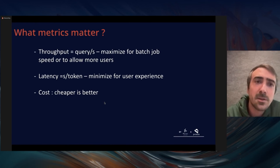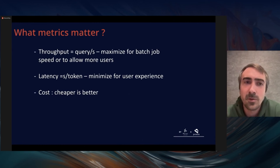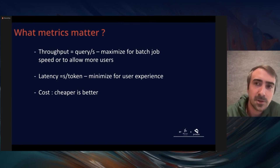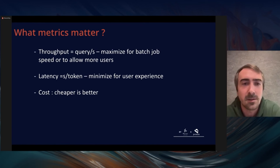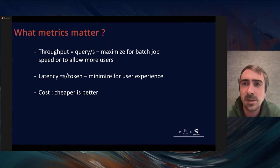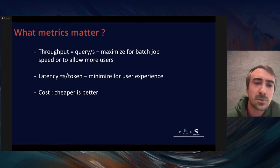The first metric is throughput, expressed in queries per second — we want to maximize this for batch jobs or to allow more users to use our service. Second is latency, expressed in seconds per token: how many seconds it takes to output the next token, which drives how snappy your application looks. A good threshold to keep in mind is 250 words per minute — the average reader speed — so as long as latency is below this, users won't get bored. And then cost: cheaper is better.